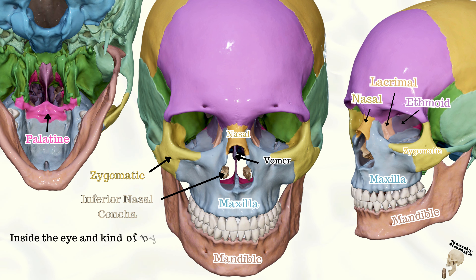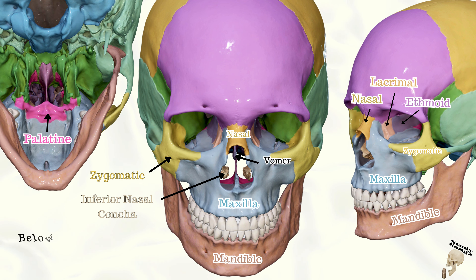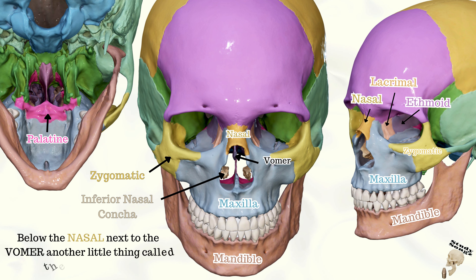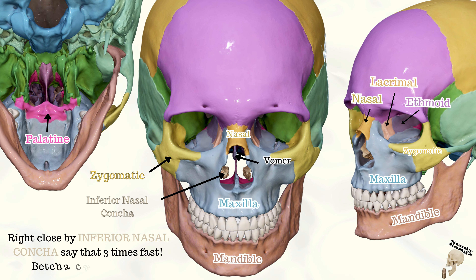Inside the eye and kind of by the nose, there's a tiny little thing called the lacrimal bone. Below the nasal, next to the bone, there's another little thing called the palatine bone. Right close by, inferior nasal conchae — say that three times fast but you can't count ya.